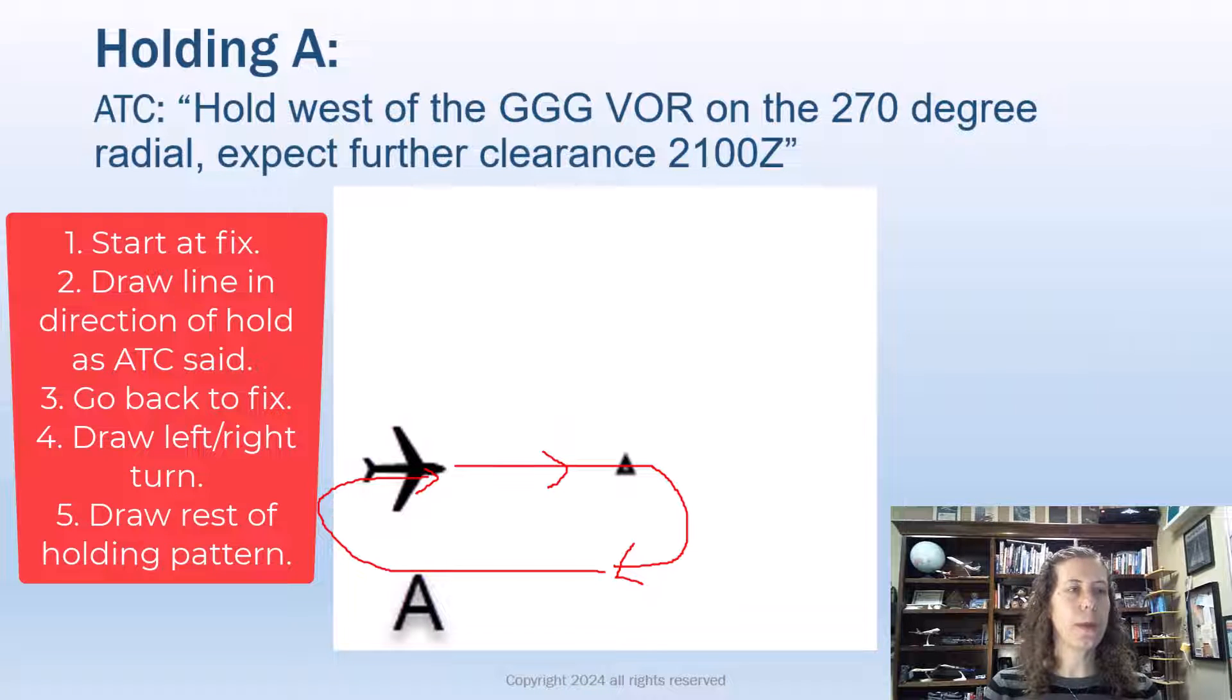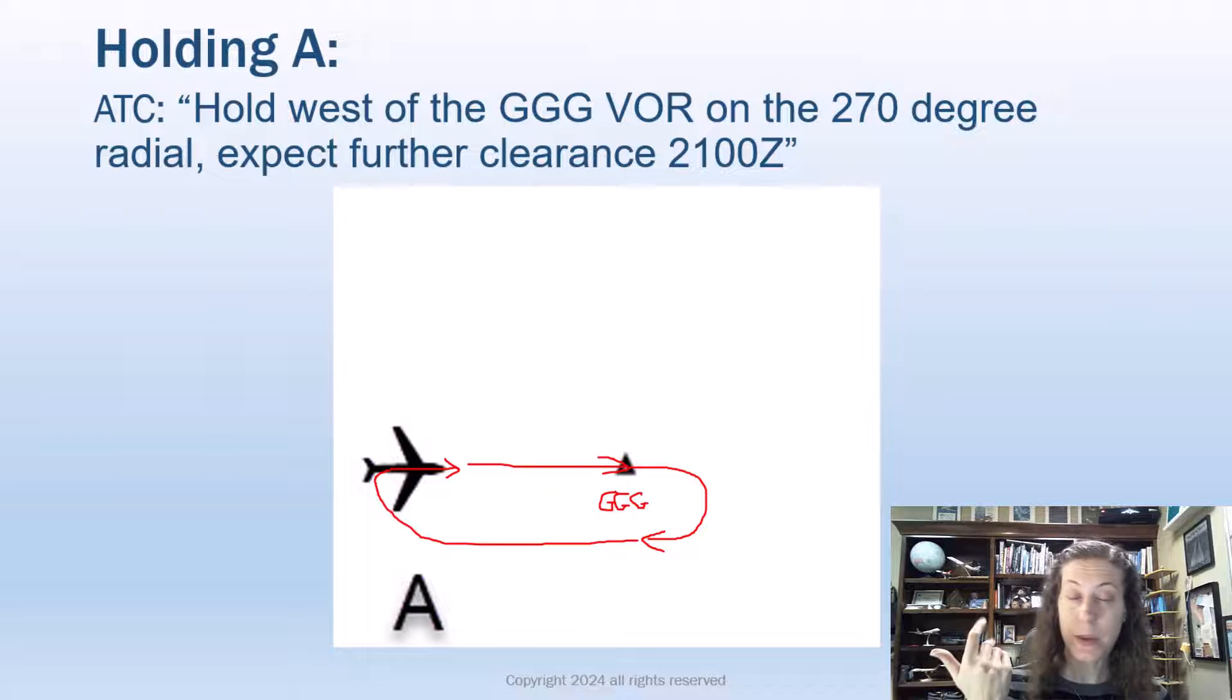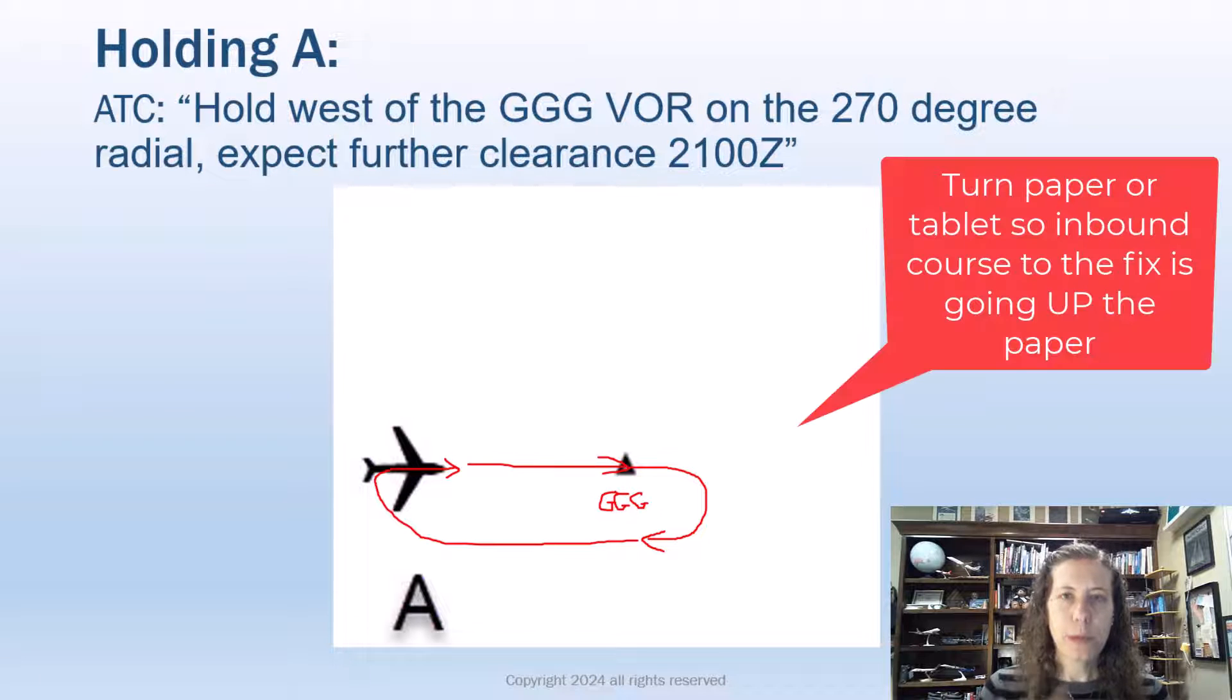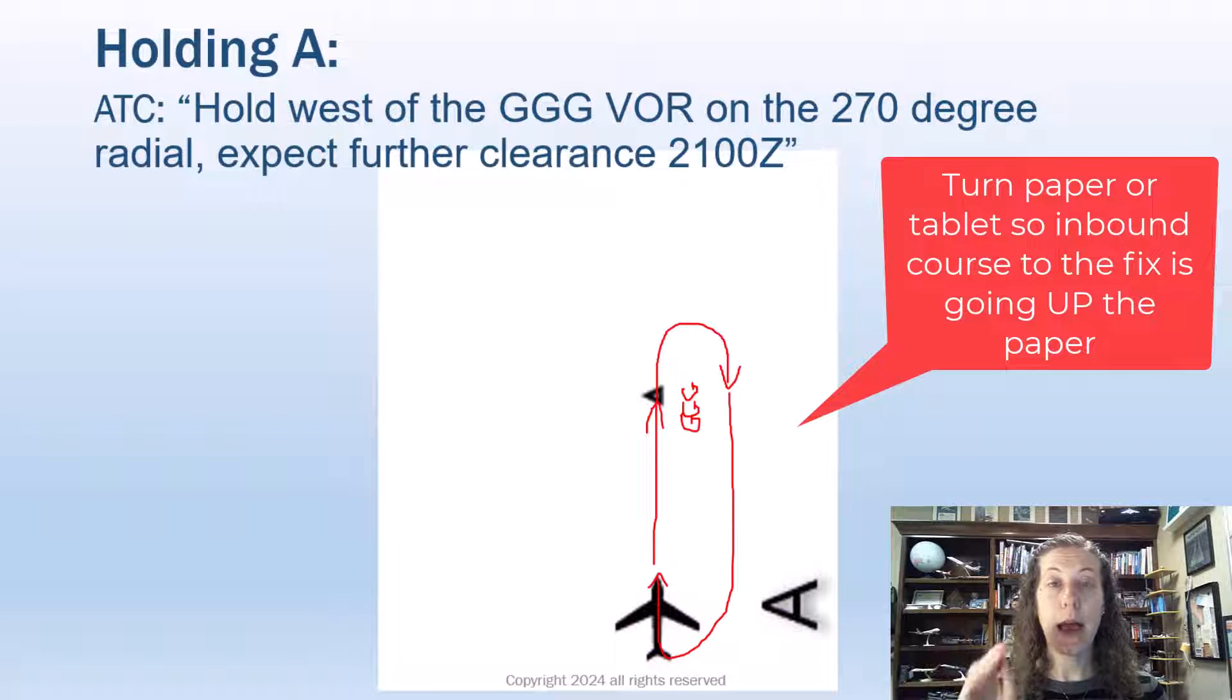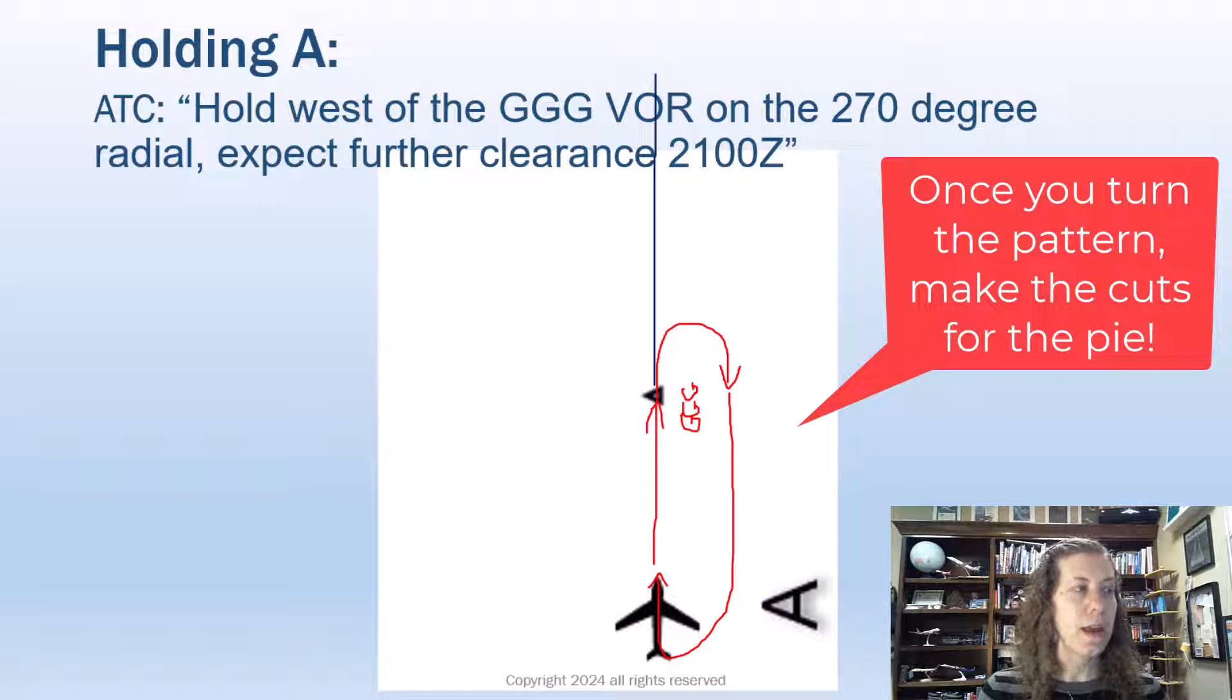Now how am I going to do the holding pattern entry? So here is what I recommend for helping you on this. I just take my tablet, if I've drawn on my scratch pad on Garmin Pilot or ForeFlight, or a piece of paper, I just take the paper and I turn it so that my airplane is going up toward the holding fix. So I've turned my paper. How am I going to draw that pie? Let's draw a line coming straight out. Okay, and now I'm going to cut the pie. Remember we were cutting the pie before.